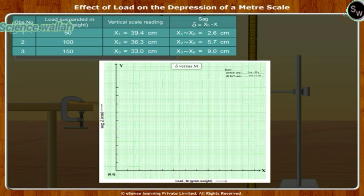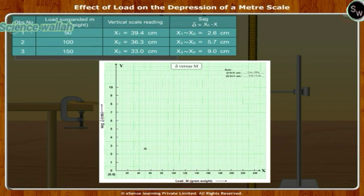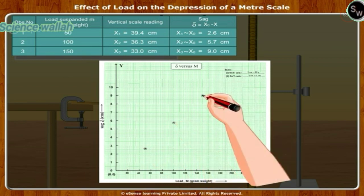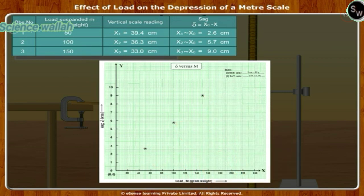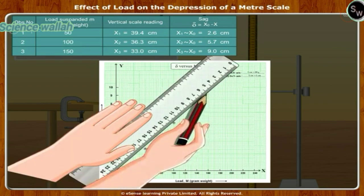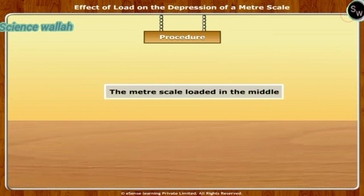Find the sag delta for each load. Plot a graph of sag delta (in centimeters) against load M (in gram-weight). The graph is as shown in the figure.